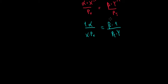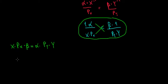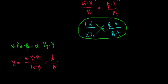This is the relationship we stopped at in the last video. Let's do a cross product to write it in a better way. We would have x times px times beta is equal to alpha times py times y. Now let's write x as a function of all the other variables. So x is equal to alpha times y times the price of y divided by the price of x times beta — or alpha divided by beta times price of y divided by price of x multiplied with y.